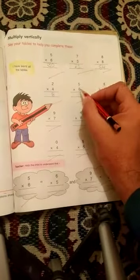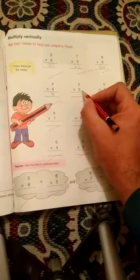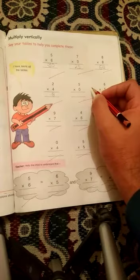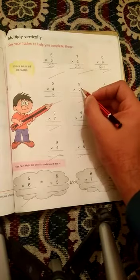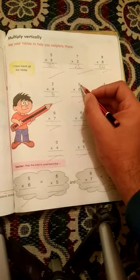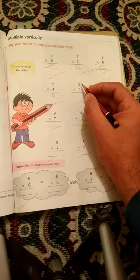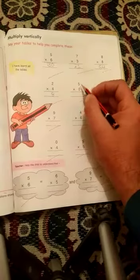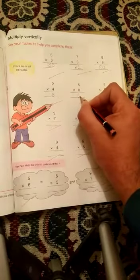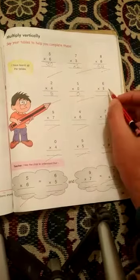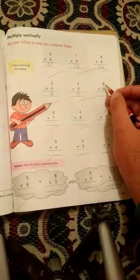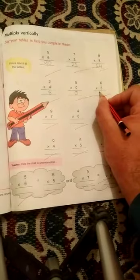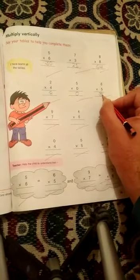Next is 5 into 0. So 5, 6 into 5. So 5 6s are 30. So right here, 8. Next is 6 into 5. So 5 6s are 30. So right here, 30, okay?